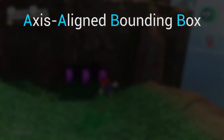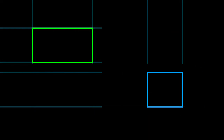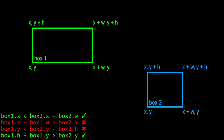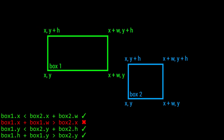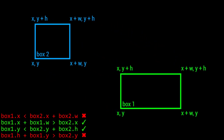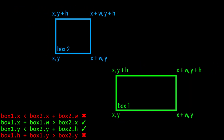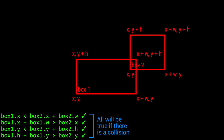Axis-aligned bounding box collision detection only works with rectangles that are aligned to the x and y axes, but it's also very simple. The way to check if two rectangles are colliding with AABB is by performing four different checks that compare the vertices of the two rectangles. If all the checks are true, then the two rectangles are colliding.